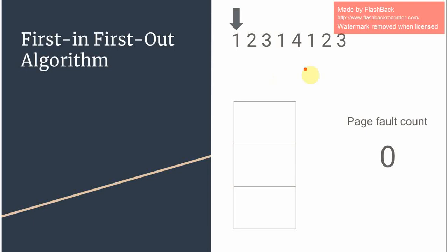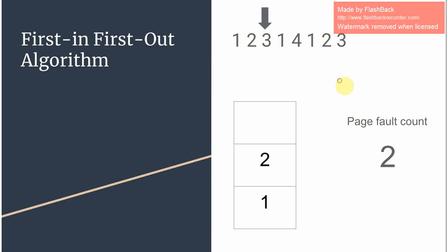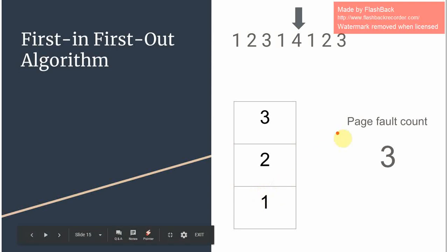Here we have 1. Since 1 is not recorded we place it in the frame and increase the page count. Since 2 is also not recorded we increase the page count, and the same with 3. When we have 1 again, since 1 is already present the page count remains the same. When 4 arrives we need to decide what to replace it with. Since 1 is the first page to be recorded, we swap out 1 with 4 and increase the page fault count.